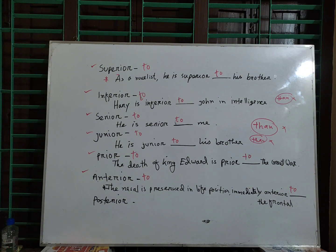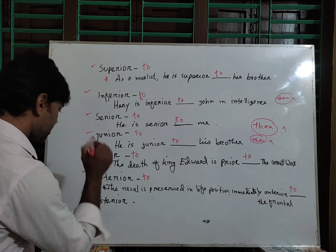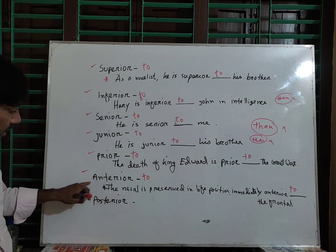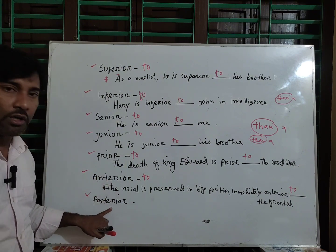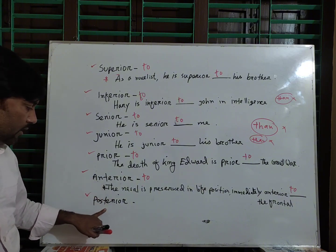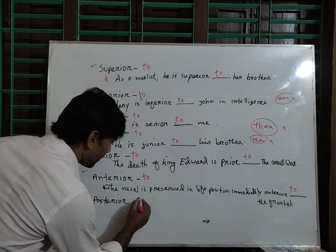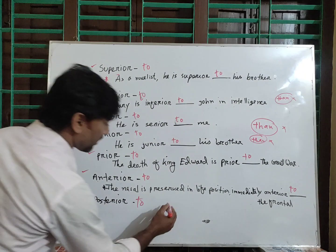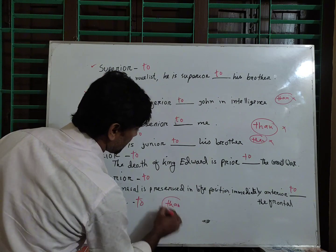This is anterior to, not anterior than. Last one: posterior. Posterior is a Latin comparative, opposite of anterior. So we write 'to', not 'than'.